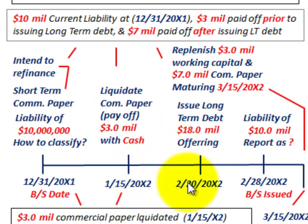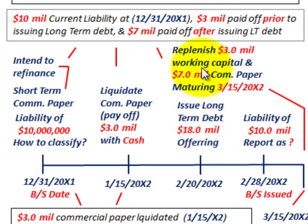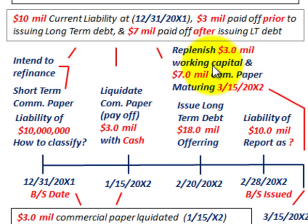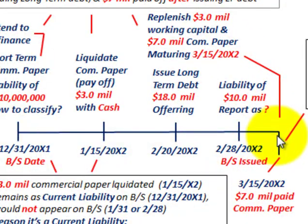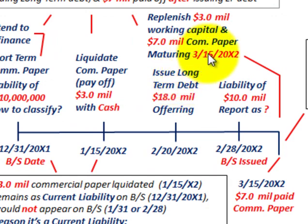On 2-20-20X2 — February 20th — we're going to issue $18 million worth of long-term debt. Of at least $10 million of that long-term debt, we intend to use $3 million to replenish the working capital (the cash) we used up when we paid off $3 million of the commercial paper. The remaining $7 million of the long-term debt we're going to earmark for paying off the rest of the commercial paper current liability on March 15th, 20X2, when it comes due.